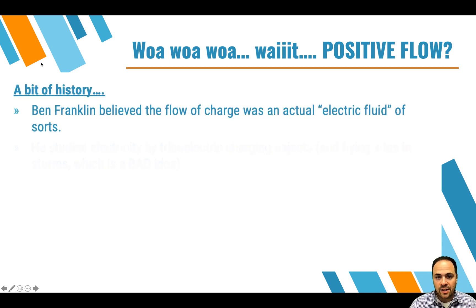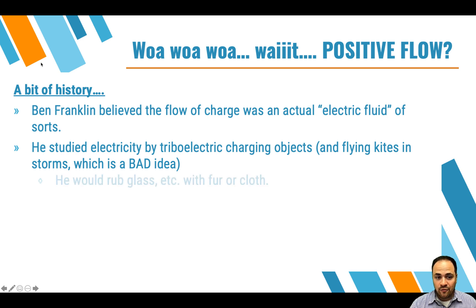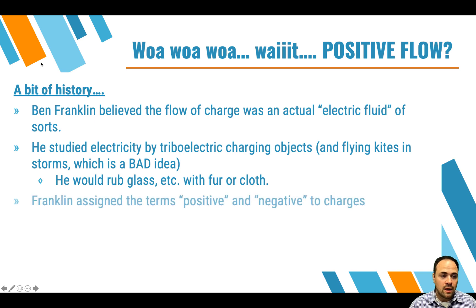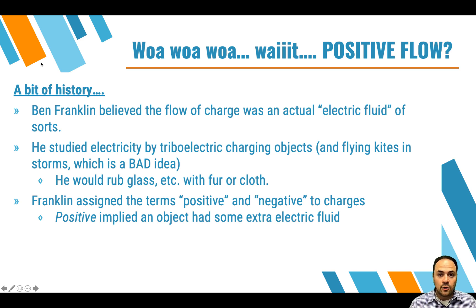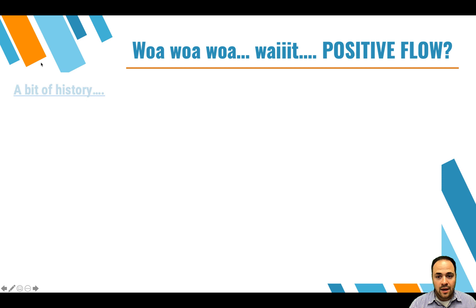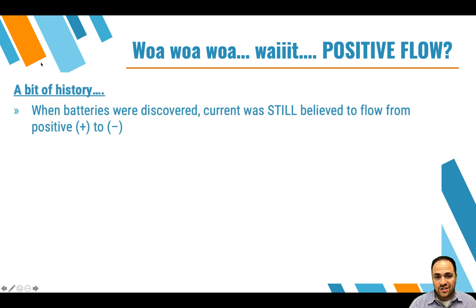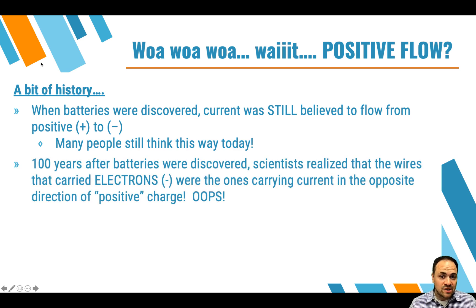So Ben Franklin started his study of electricity by tribo-charging objects, charging by friction, and flying kites in storms, which I do not recommend at all. And so he assigned the terms positive and negative to this apparent electric fluid that he thought existed. And so positive meant you had some extra of this fluid, negative meant that you had a little bit less of this fluid. And when batteries were discovered, current was still believed to flow from positive to negative from more to less. And many people actually still think this way. When you look at a battery, if you see plus and minus, you might even think that the charge is flowing from plus to minus. That's actually not the case. It was discovered that electrons were the actual charge carriers, and those were the particles that were doing the moving through wires.